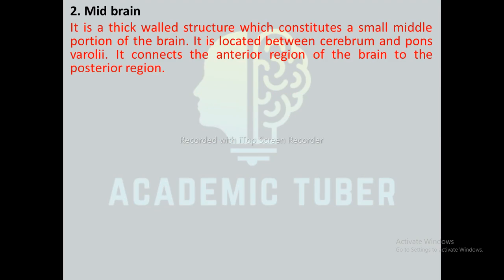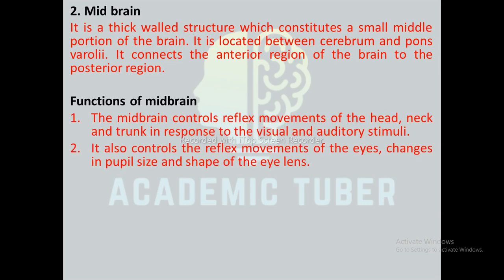The midbrain is a thick-walled structure forming a small middle portion of the brain, located between the cerebrum and pons varolii. It connects the anterior region of the brain to the posterior region. Its functions include controlling reflex movement of the head, neck, and trunk in response to visual and auditory stimuli, as well as controlling reflex movement of the eyes and changes in pupil size.